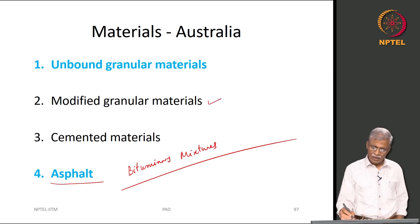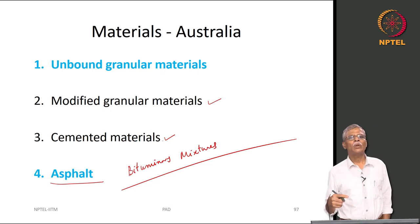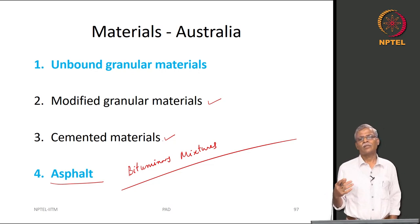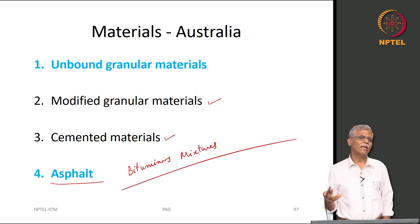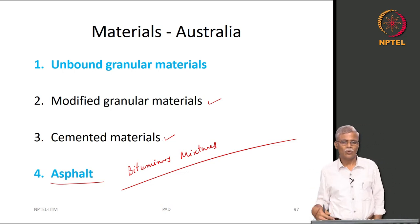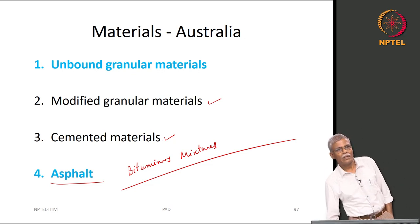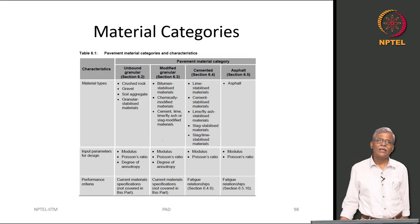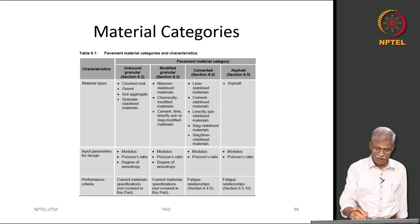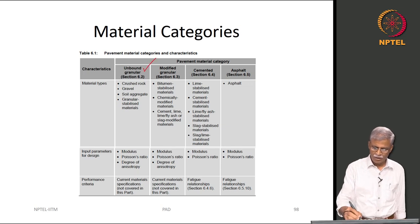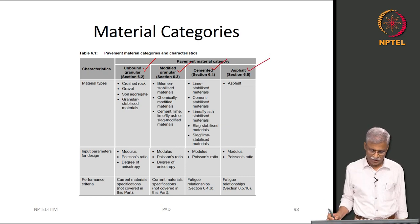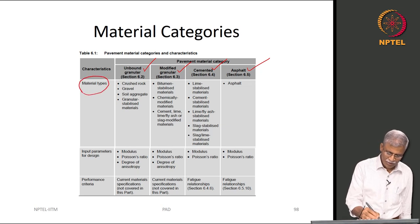Modified granular material and cemented material have their own intricacies associated with checking for fatigue and all those things. These are details you can read on your own from the guideline — I have also shown you how to download it. The various categories defined are: unbound granular material, modified granular material, cemented material, and bituminous material.